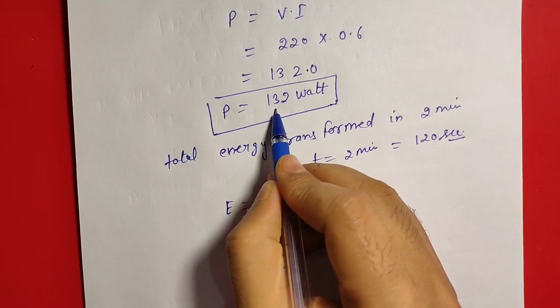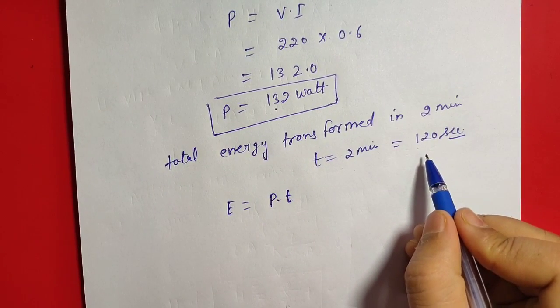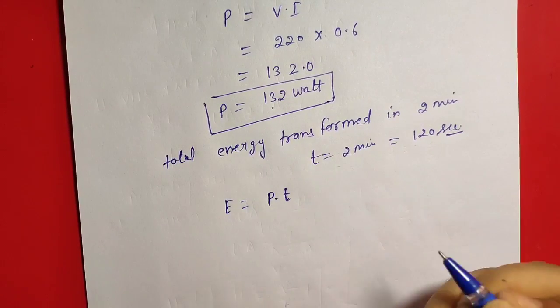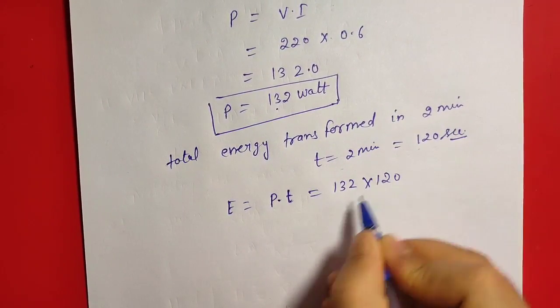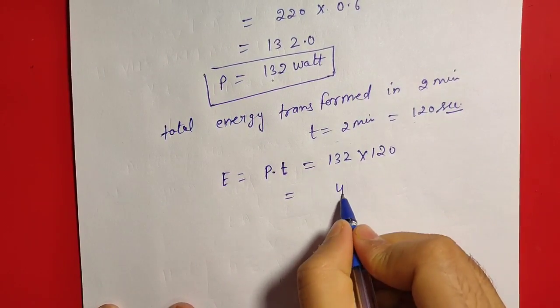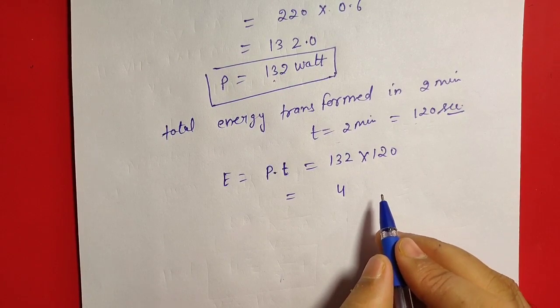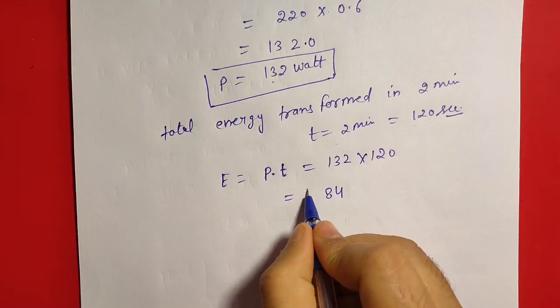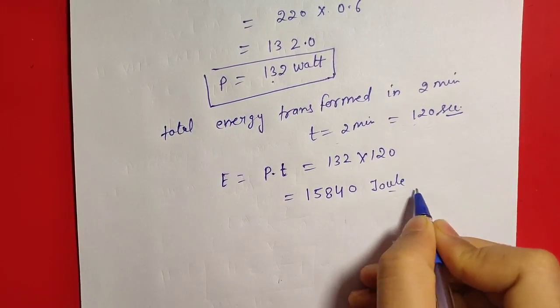Then energy is equal to P into T. 132 joule energy consume per second, so 120 seconds kitna consume, then you have to do multiplication, so P into T. That is equal to 132 into 120. 132 to 120 multiply, so 12 to 24 carry 2, 136 plus 2 is 38 carry 3, 12 by 12 and 3 is 15, 0. 15,840 Joule.